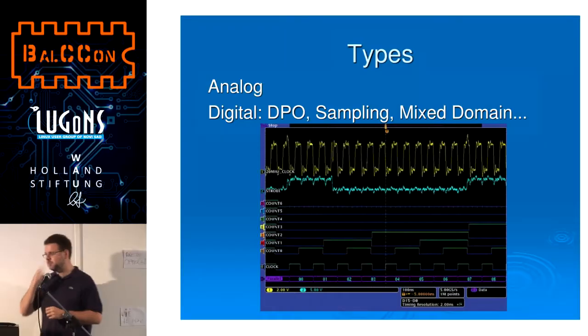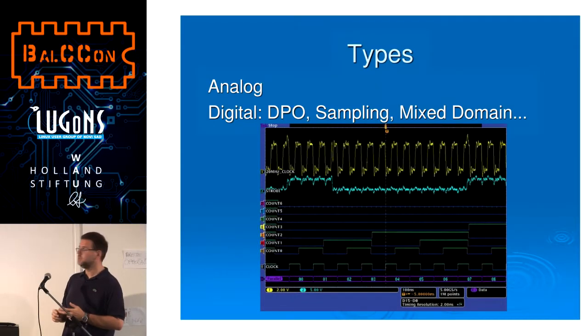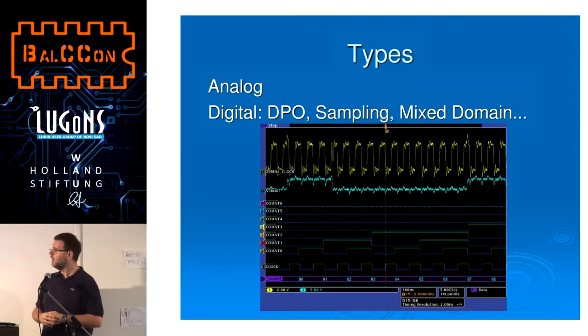There are two types of oscilloscopes: analog and digital. Digital types include DPO, sampling, and mixed domain. Most modern and most expensive digital oscilloscopes can show you both analog and digital waveforms — so it's more of an analyzer than just a scope. But that's very advanced.